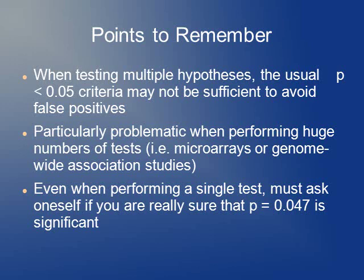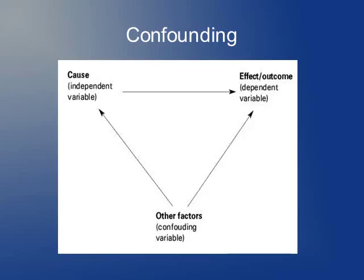Even if you only do a single test, you have to ask yourself how confident you are that p = 0.047 is really significant, particularly if it's going against conventional wisdom. Another major problem in experimental design that gets overlooked is confounding. When you do an experiment, you often want to say A causes B. Confounding means there's some other variable C that's associated with both A and B, so you don't know if A is associated with B at all or if it's just C causing both.